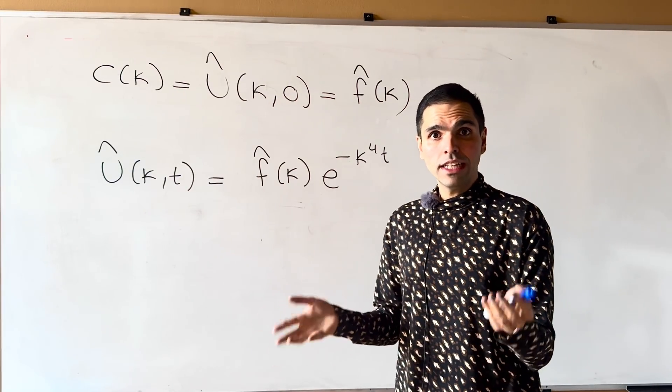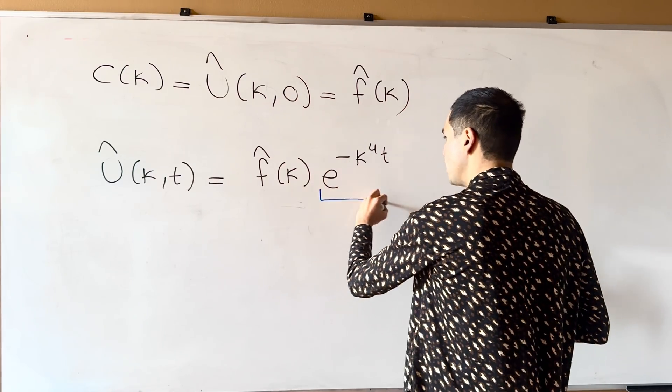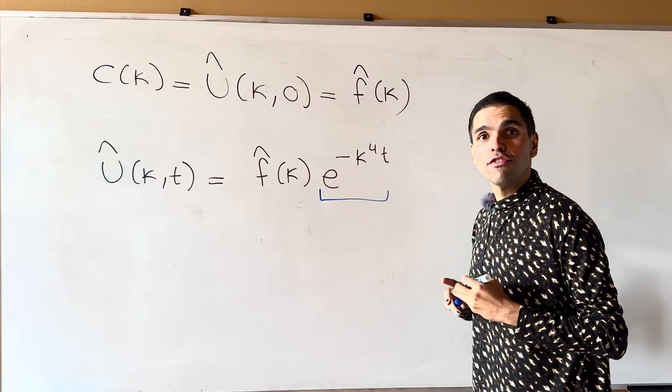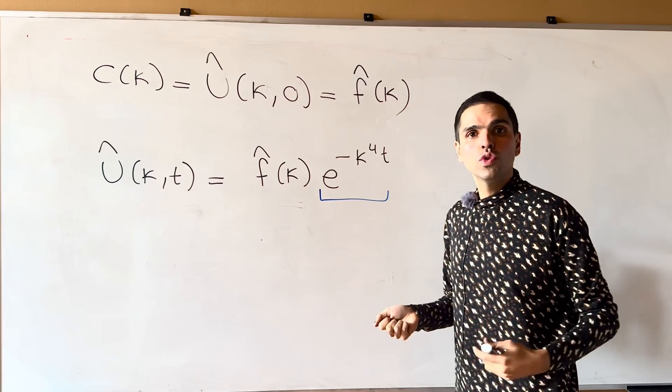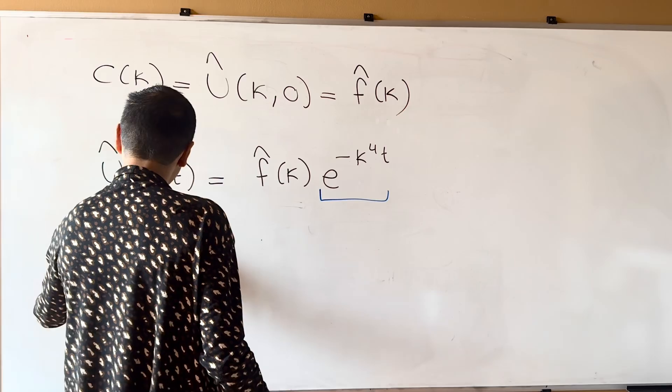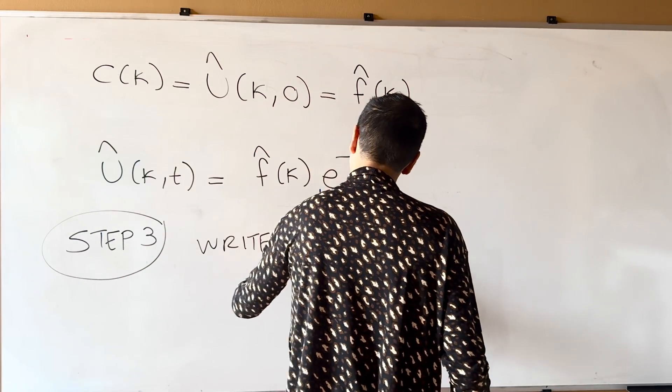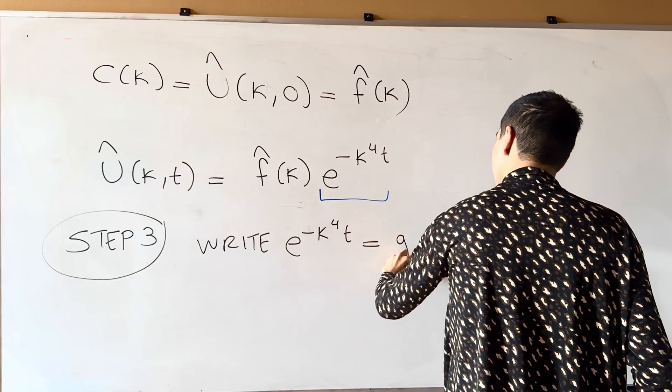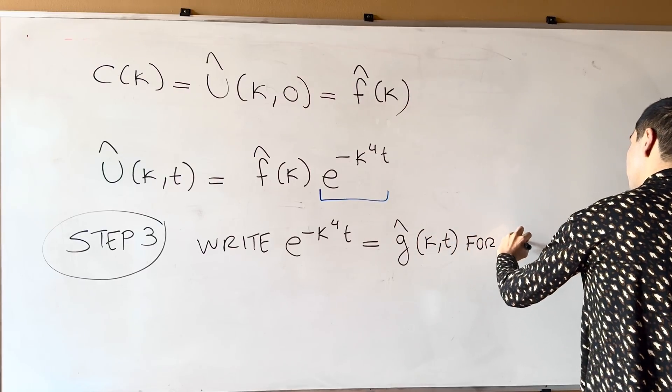And now, remember what we did for the heat equation? For the heat equation, the point was to write this as a Fourier transform with the view of later using convolution. So now I'll give step three. Write E of minus kappa to the fourth T as G hat kappa T for some G.